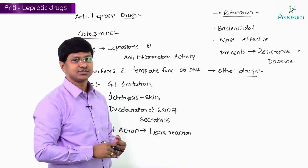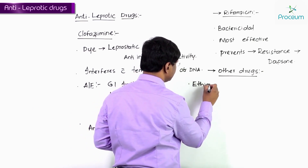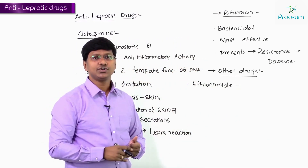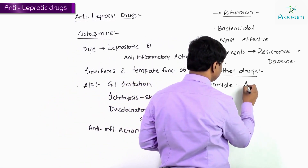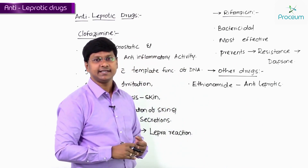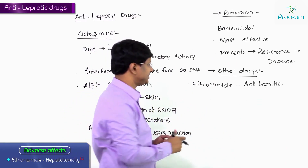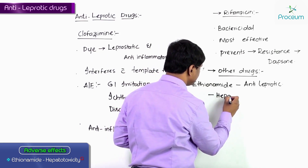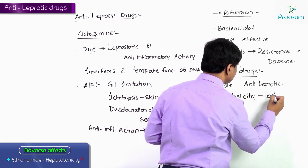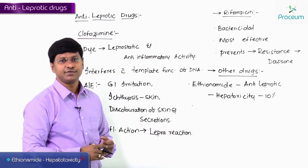Other anti-leprotic drugs include ethionamide. Ethionamide has anti-leprotic activity, but it can cause hepatotoxicity in 10 percent of patients.